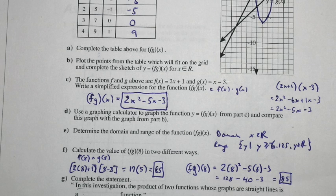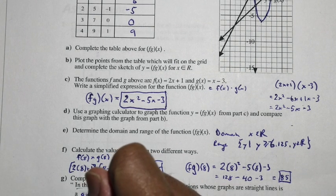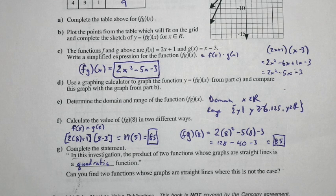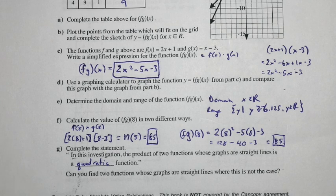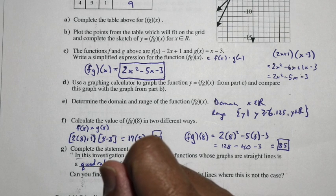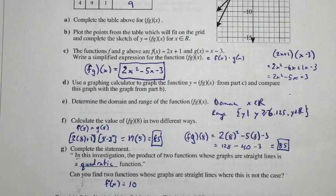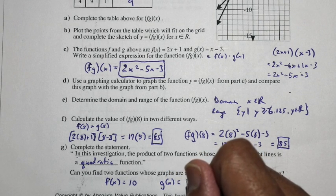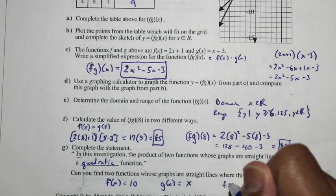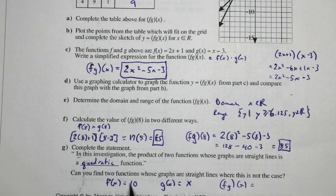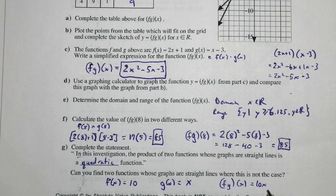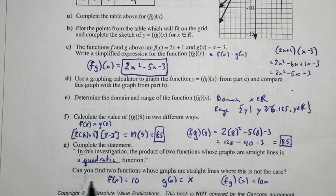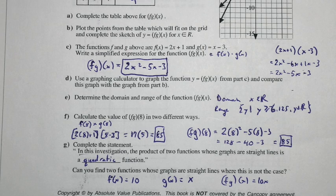Let's complete the statement: in this investigation, the product of two functions whose graphs are straight lines ended up being a quadratic function. But can you find two functions whose graphs are straight lines where the product is not a quadratic? Let's test it. If f of x equals 10, a constant horizontal line, and g of x equals x, then fg(x) is 10 times x, which is 10x — clearly a linear function, not quadratic. So yes, it is possible.